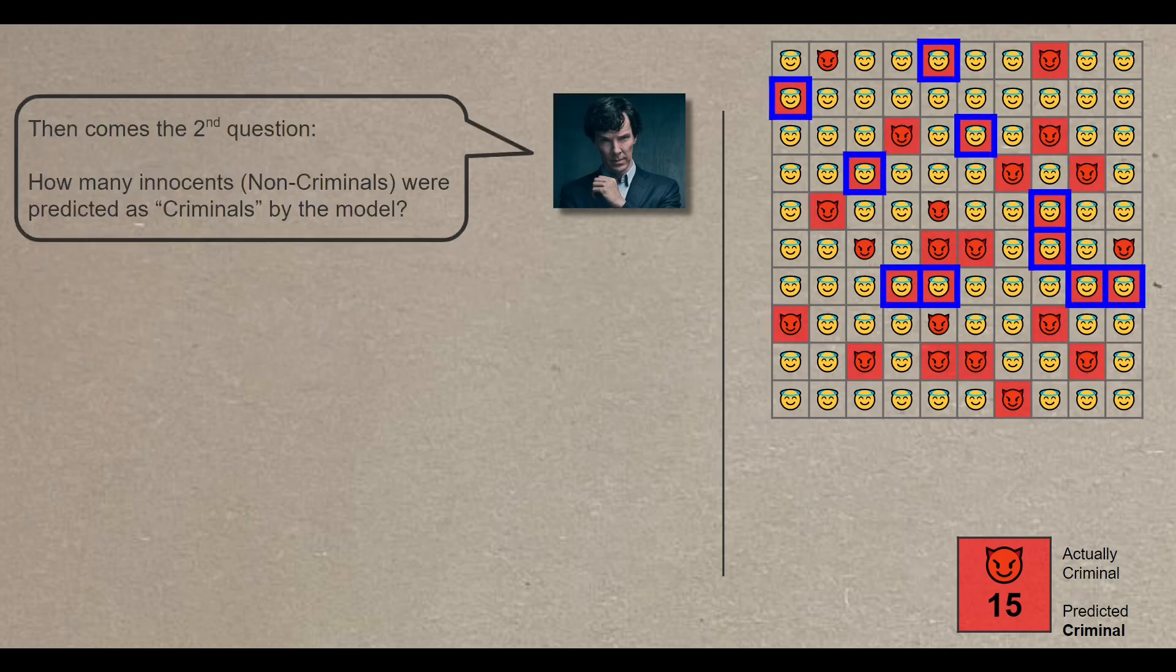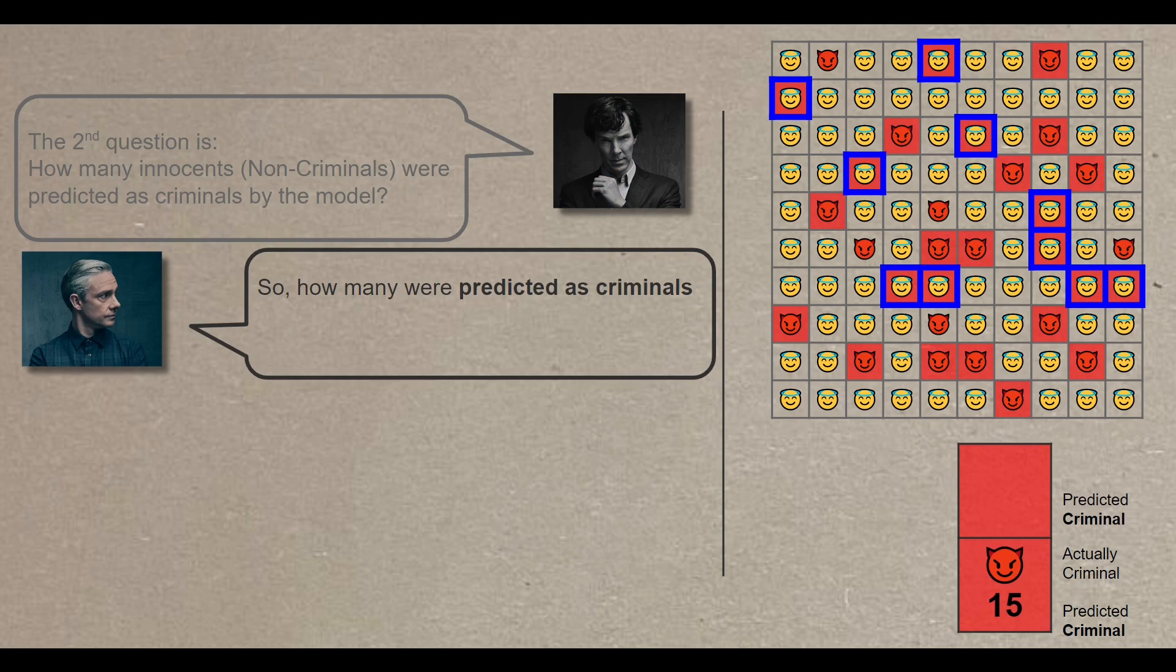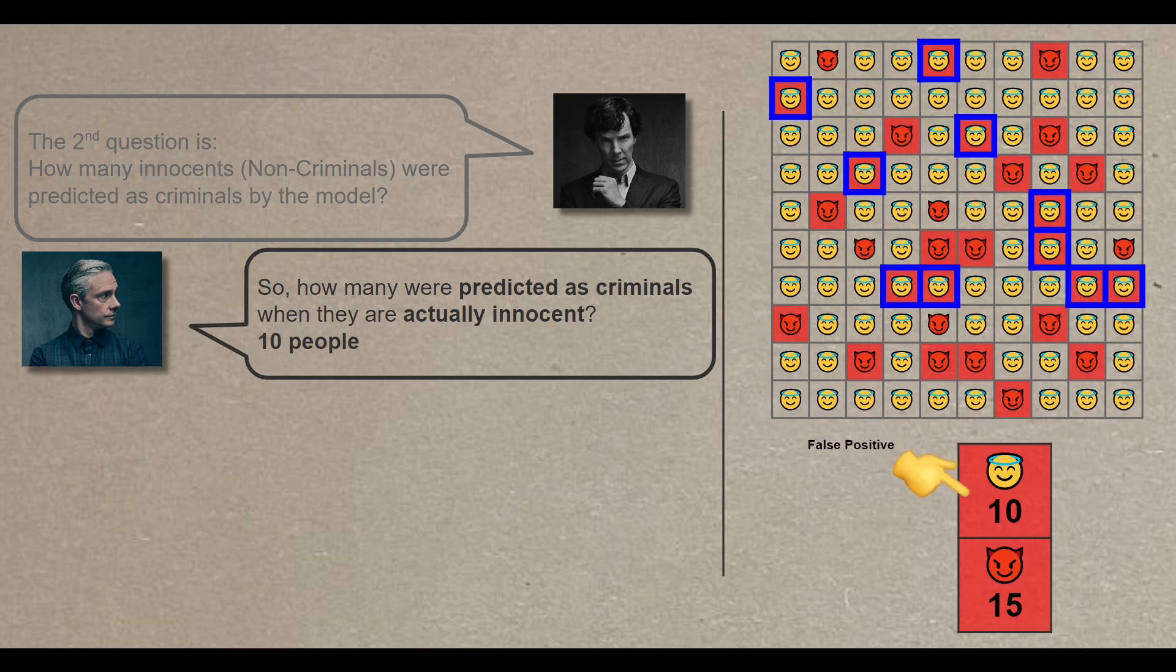The second question is how many innocents were predicted as criminal by the model? So how many were predicted as criminals when they are actually innocent? Let me count, that would be 10 people. And this is what's known as false positive. False because the prediction doesn't align with reality, red shade, yellow emoji, and positive because the prediction affirms that the person is criminal.